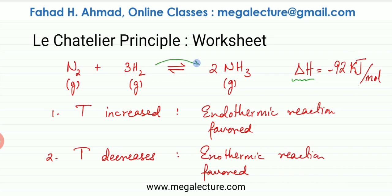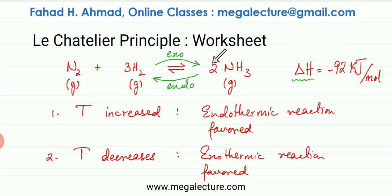Remember, delta H is always given for the forward reaction. The negative sign indicates exothermic — energy is being released. So the forward reaction in this reversible reaction is exothermic, and the backward reaction is going to be the exact opposite — endothermic. Always remember: the enthalpy change given is for the forward reaction and the backward is going to be the exact opposite. So if temperature increases, the endothermic backward reaction is favored.